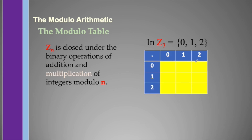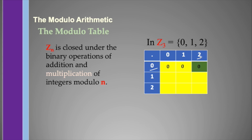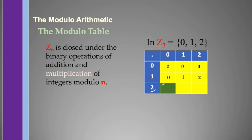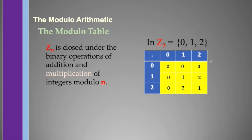Now let's try multiplication, still in Z sub 3 where values are 0, 1, and 2. Starting with 0×0=0, 0×1=0, 0×2=0, 1×0=0, 1×1=1, 1×2=2, 2×0=0, 2×1=2, and 2×2=4 which is 1 at modulo 3. Since all values are composed of 0, 1, and 2, we can say it is closed under multiplication.